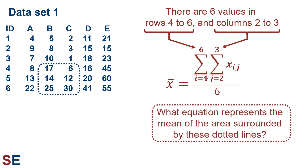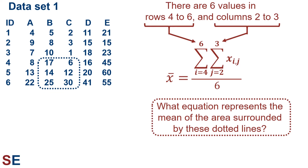For the area shown by the dotted line, there are six values covering rows 4, 5, and 6 and columns 2 and 3. So we have the double summation with i going from 4 to 6 and j going from 2 to 3 of x_{i,j}, divided by 6 to get the mean.